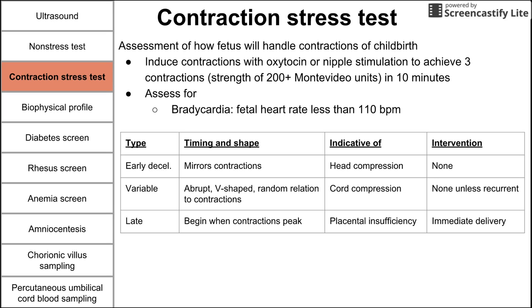During a contraction stress test, you want to assess for bradycardia in the fetus, which is a heart rate dropping to less than 110 beats per minute. There are other types of decelerations to watch for in contraction stress testing as well.